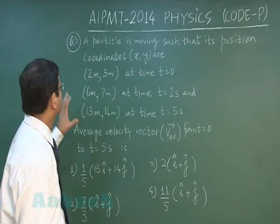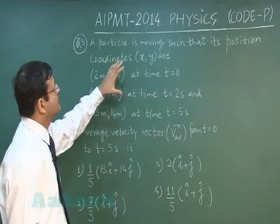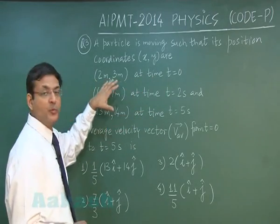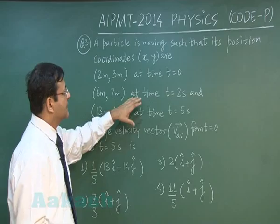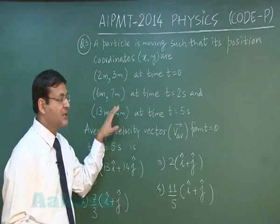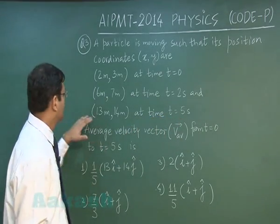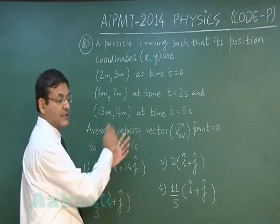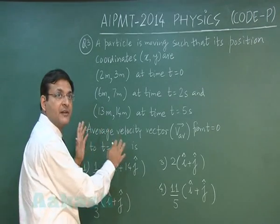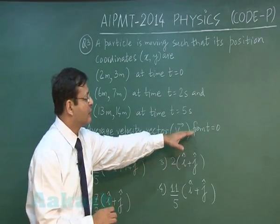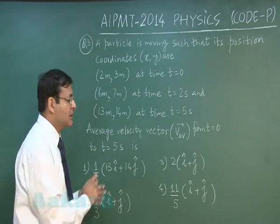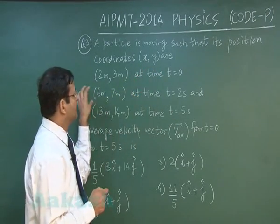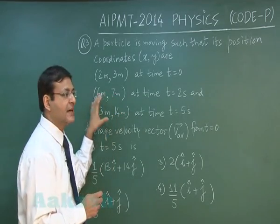In question number 3, a particle is moving such that its position coordinates x and y are: at t = 0, (2 m, 3 m); at t = 2 s, (6 m, 7 m); and at t = 5 s, (13 m, 14 m). You are supposed to find the average velocity vector from t = 0 to t = 5 s. For average velocity, all you need are the final and initial coordinates — the data given for t = 2 s is irrelevant here.